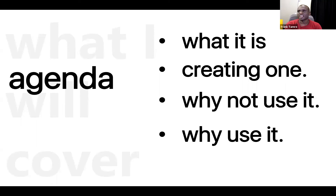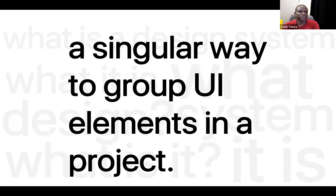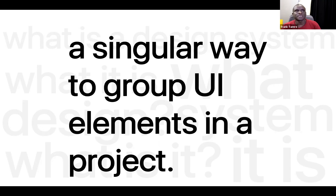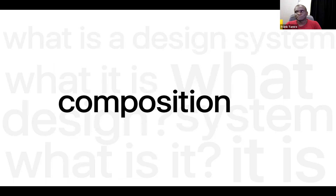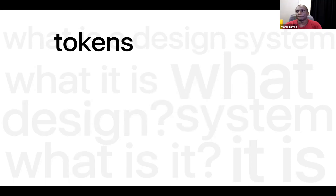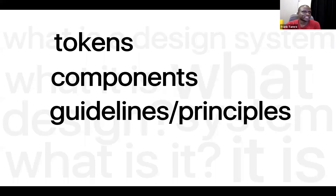A design system is a singular way to group UI elements for a project. It's composed of four main elements: first is a token, then a component, then you have guidelines or principles, and then you have tools. I'm going to break down all of this in terms of what a design system is and how it will be relevant for you.